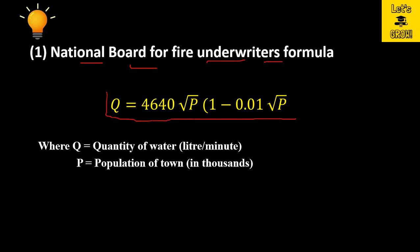Here you can see the formula: Q equals 4640 times square root P times bracket 1 minus 0.01 times square root of square root P bracket closed. Where Q is the quantity of water required in liter per minute, and P is the population of the town or city in thousands.